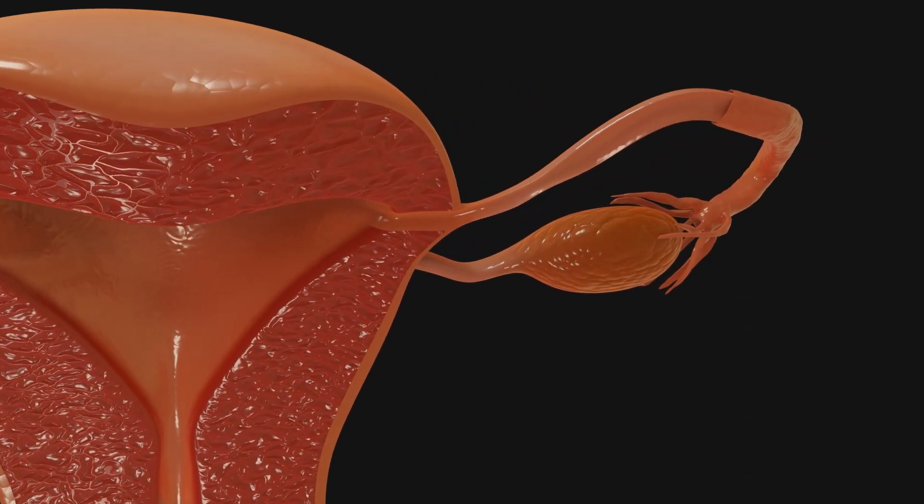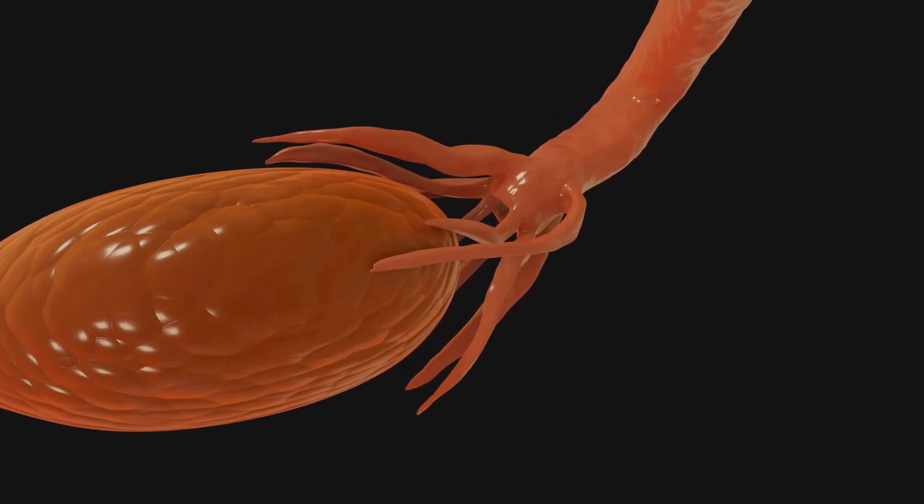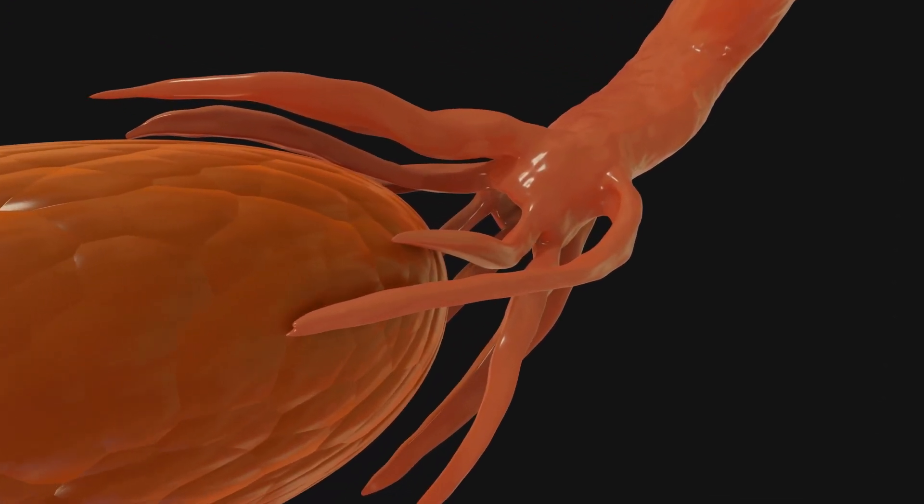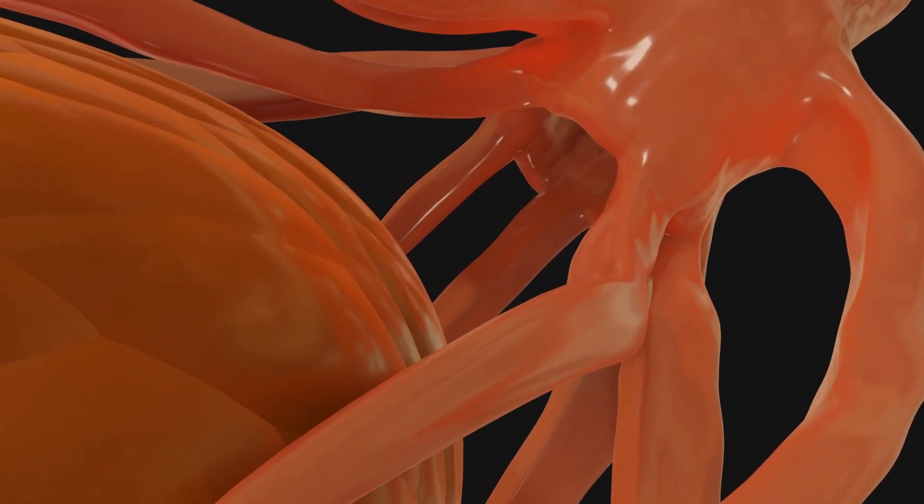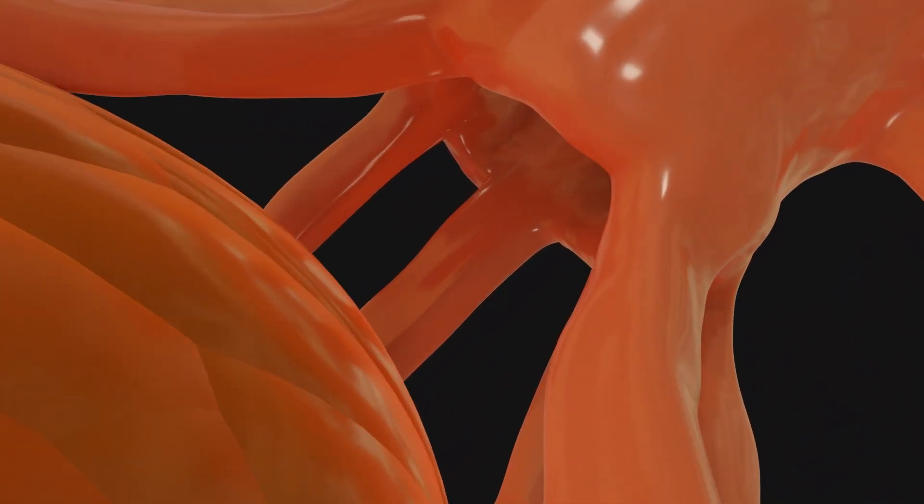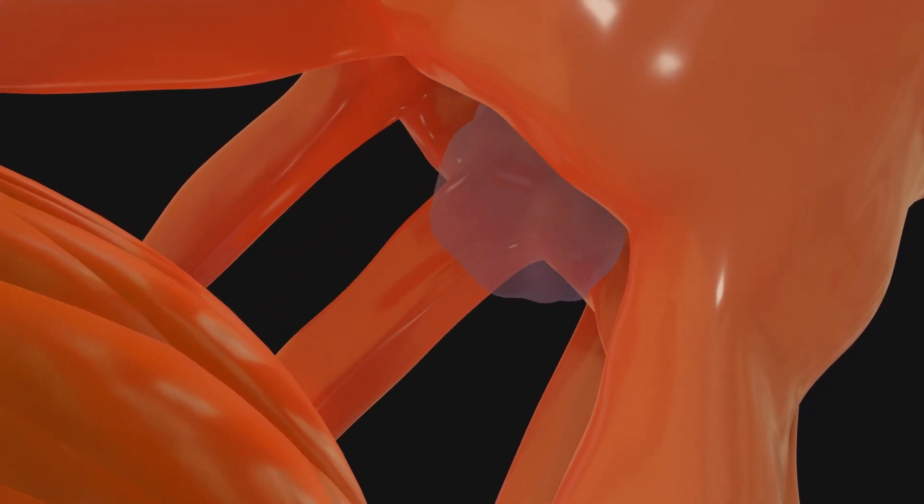The infundibulum of the fallopian tube, with its finger-like extensions, moves towards the mature follicle and captures the egg cell along with the sticky fluid surrounding it. From here, the oocyte moves towards the uterus. Unlike sperm, the female germ cells are not capable of independent movement.